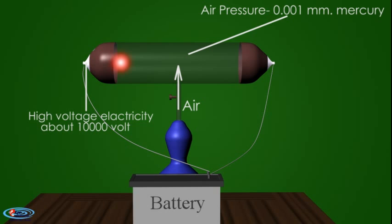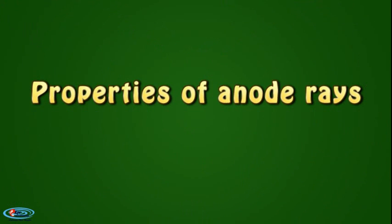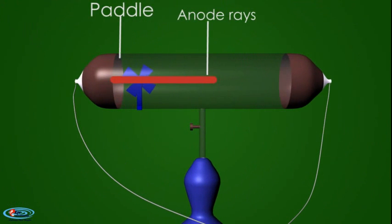Properties of anode rays. 1. Anode rays produce mechanical effect. A paddle wheel placed in the path starts rotating.